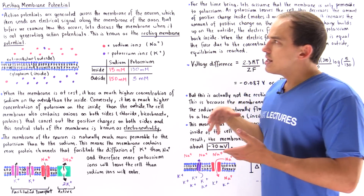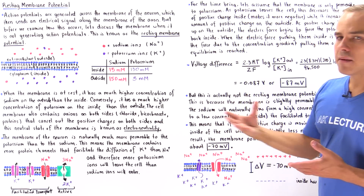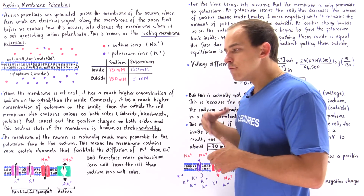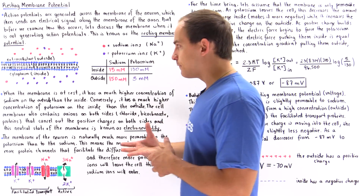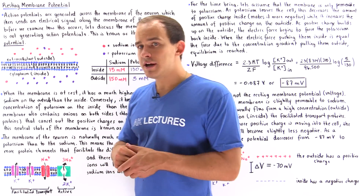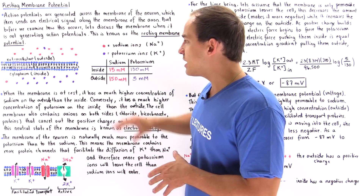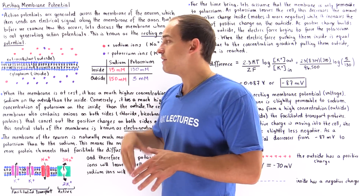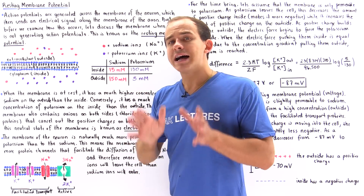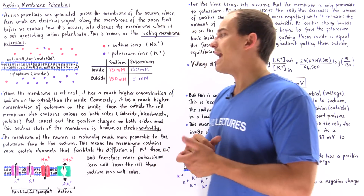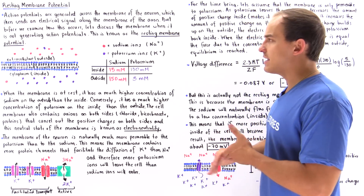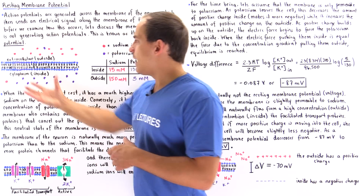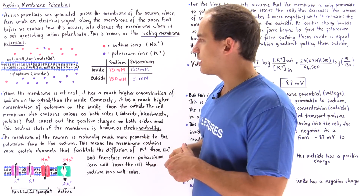So once again, the resting membrane potential is the voltage difference, or the electric potential difference, between the inside and the outside of a neuron that is not generating any action potential. Let's begin by looking at the following diagram.